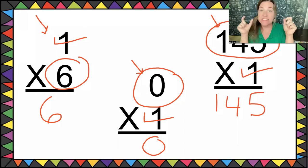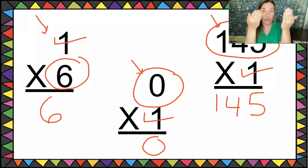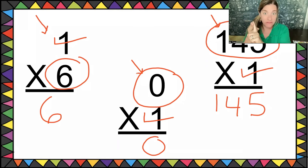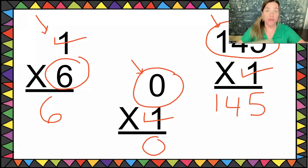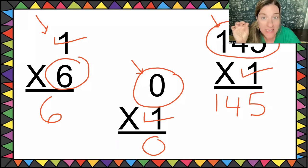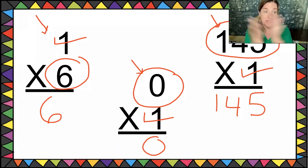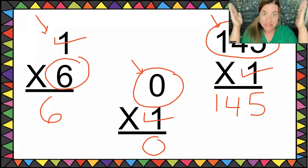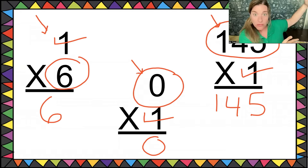Remember, with multiplication it doesn't matter what order the numbers are in — just like addition. If you do one plus two equals three, two plus one also equals three. The same is true for multiplication. For subtraction and division, the order matters, but not for multiplication. That's what makes it very manageable — you can choose what rule to use.